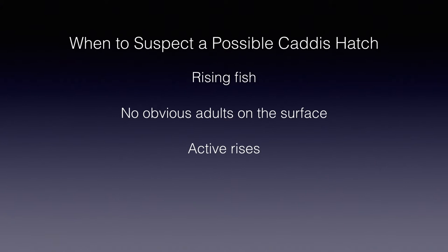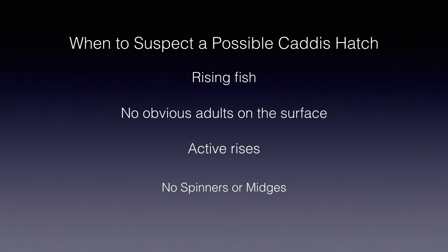You should suspect a caddis hatch if you see numerous rising fish without an obvious adult on the surface. While you should also consider spinners and midges, spinners can usually be seen on the surface if you look closely. Midges and spinners will often be on flat, relatively slow water, while caddis hatches may be on fast, riffled water as well as slower water. The aggressive rise forms — sometimes even with trout coming completely out of the water — are often your first and best clue. If you look closely, most of the rises are swirls, bumps, and don't leave bubbles, meaning the trout are taking something mainly subsurface.